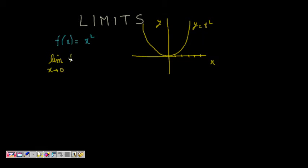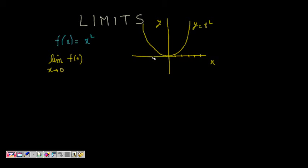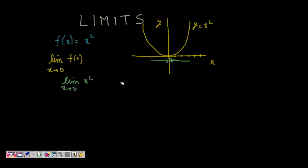Now, what does 'limit x tends to 0 of f(x)' mean? It means we are coming closer and closer to 0. We can approach 0 from the left-hand side or from the right-hand side. As x gets very close to 0 — but not exactly 0 — what is the value that f(x) is tending to?